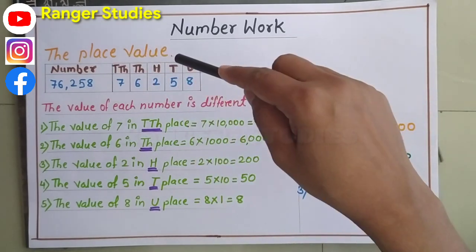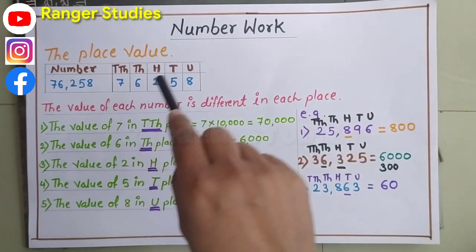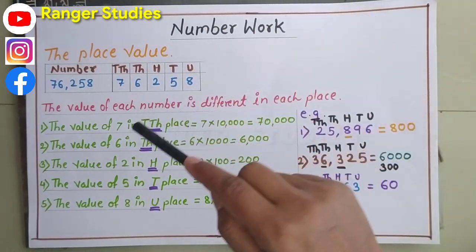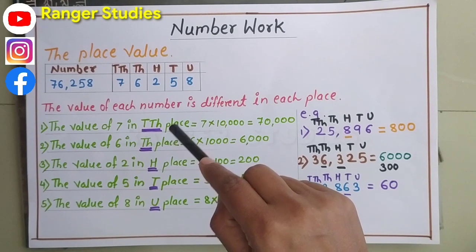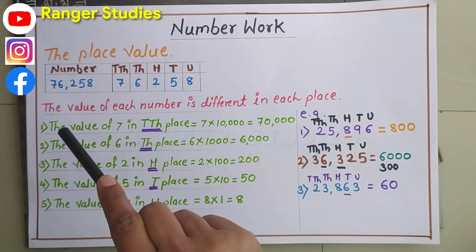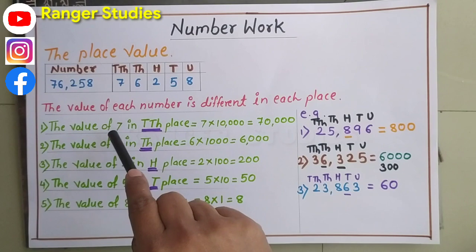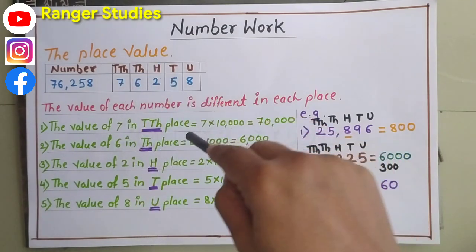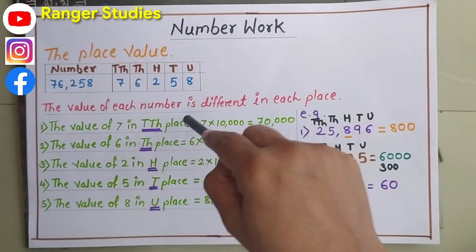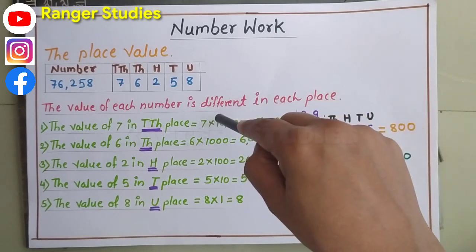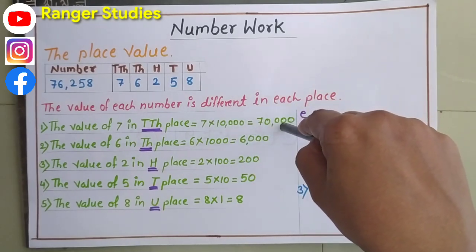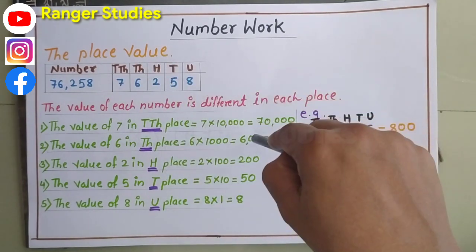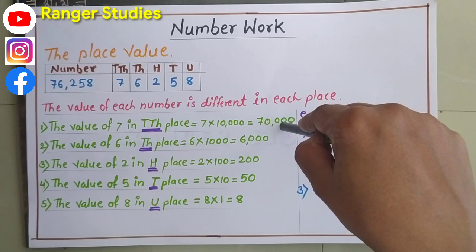So the value of each number is different in each place. Let's see the value of each place. The value of 7 in ten thousand place, TTH means ten thousand place. So 7 multiplied by 10,000, we get 70,000. What is the value of 7 place? 70,000.